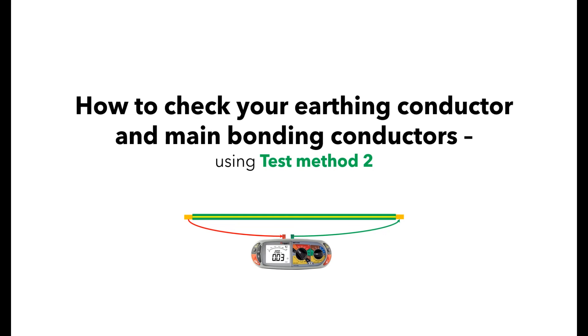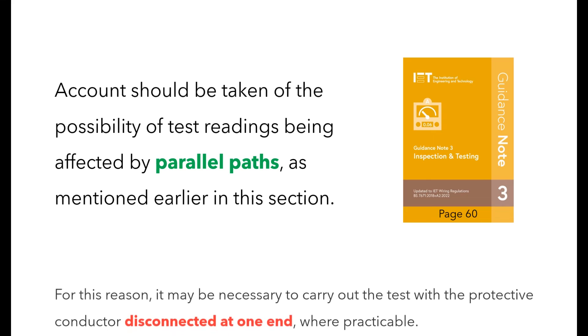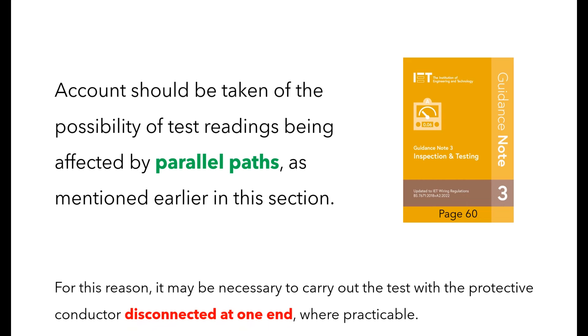In this video we are going to check our earthing conductor and main bonding conductors using test method 2, which is often referred to as the long lead method as you may need an extension to your test leads like this one. In the newest edition of GN3, page 60 talks about the possibility of test readings being affected by something we call parallel paths, which we will talk about shortly. The thing I want you to draw your attention to is highlighted in red, and that is you will have to disconnect one end of your conductor to remove the parallel paths.